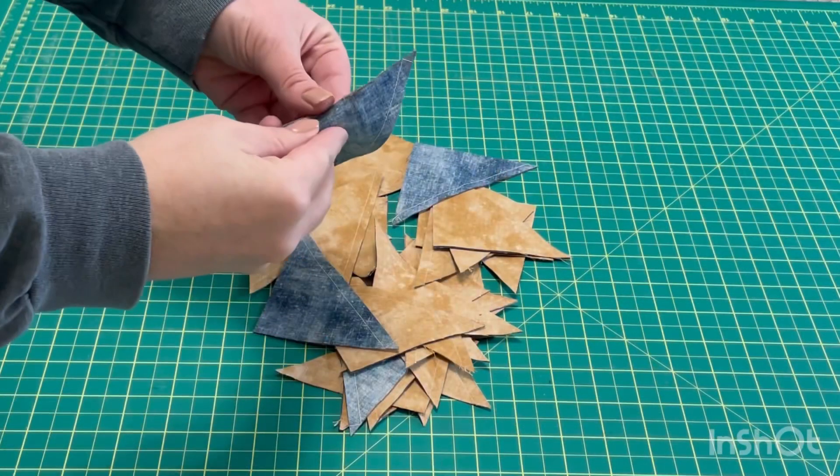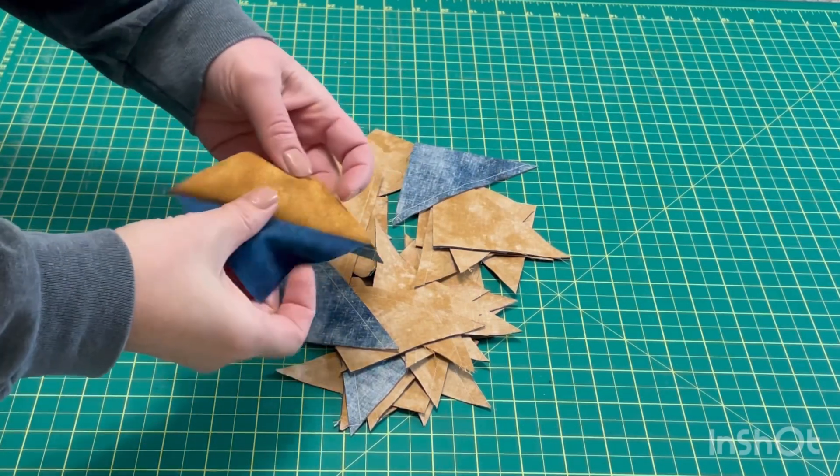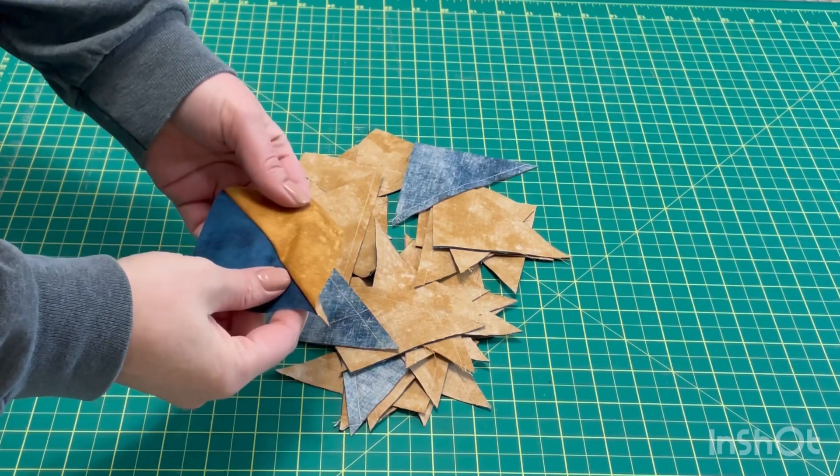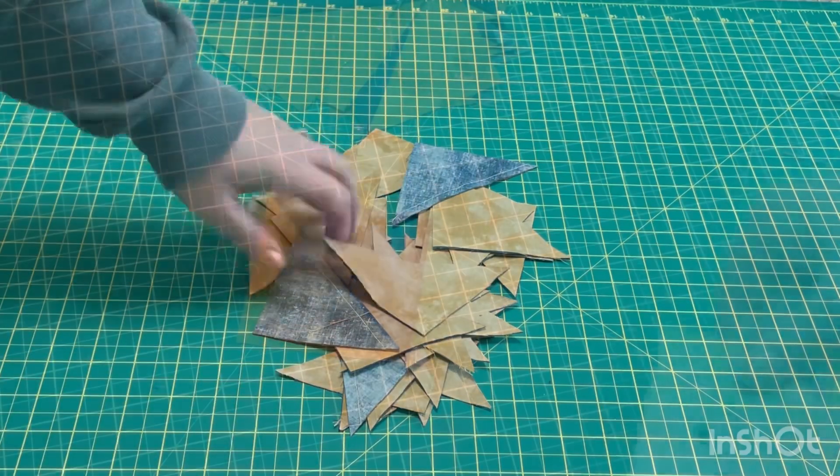And then here we have my nice pile of 32 half square triangles. I'm just going to give them all a good press and then start trimming them up. I did add a little bit of extra so that I would have trimming room.